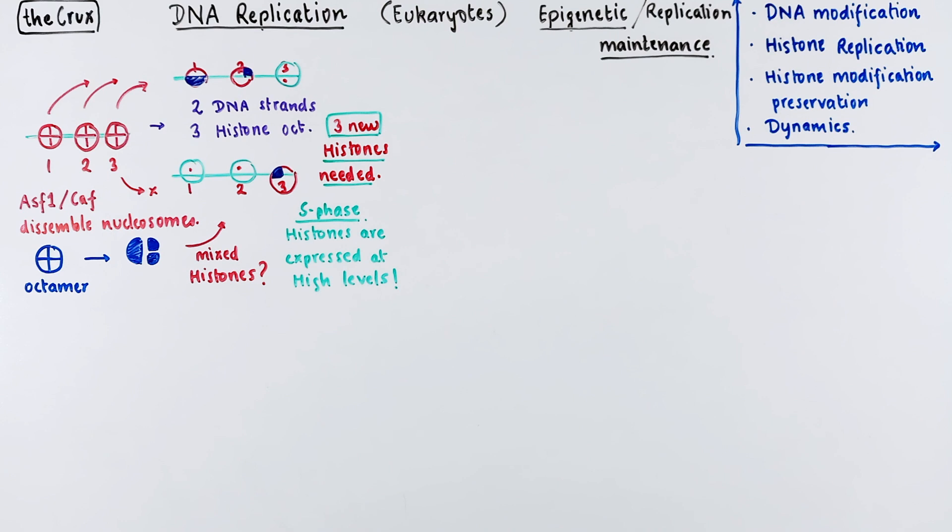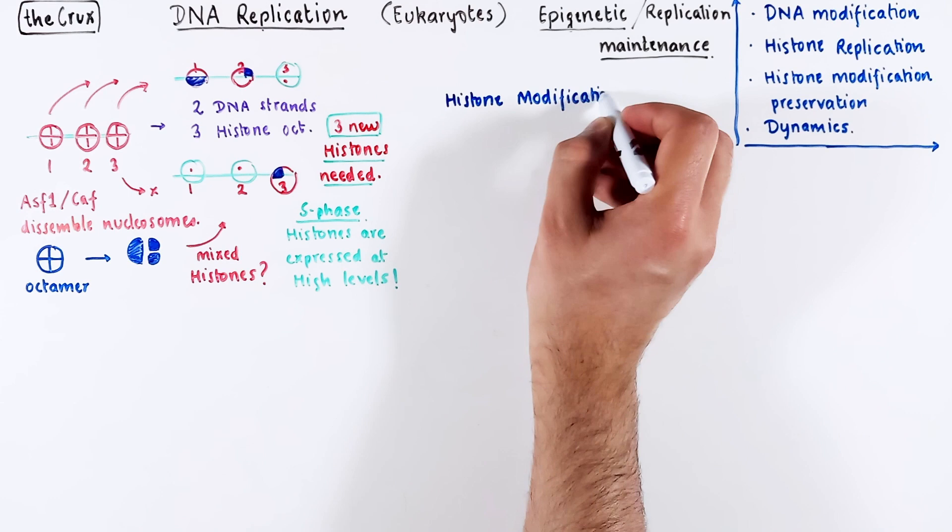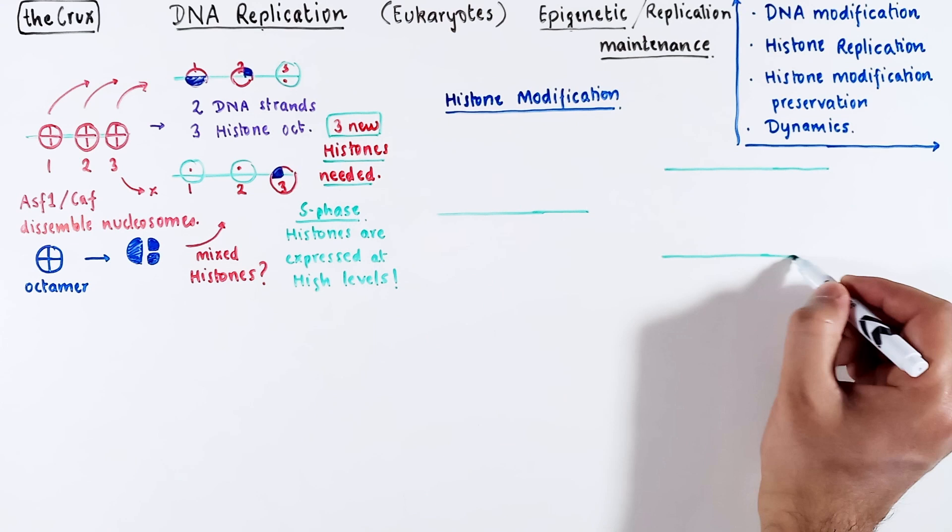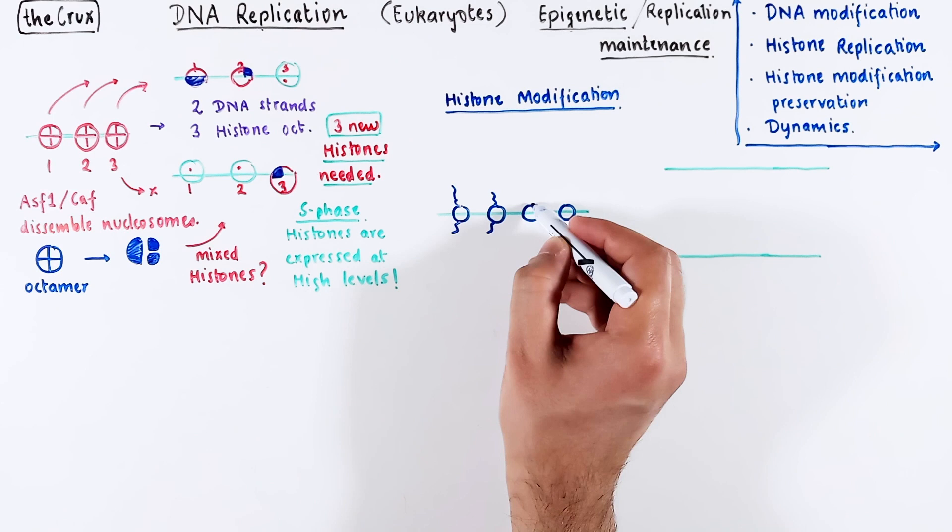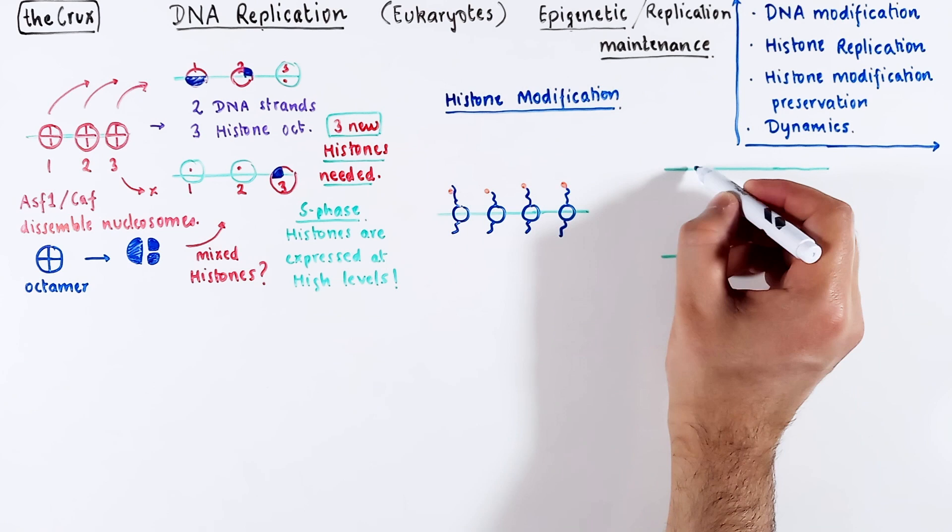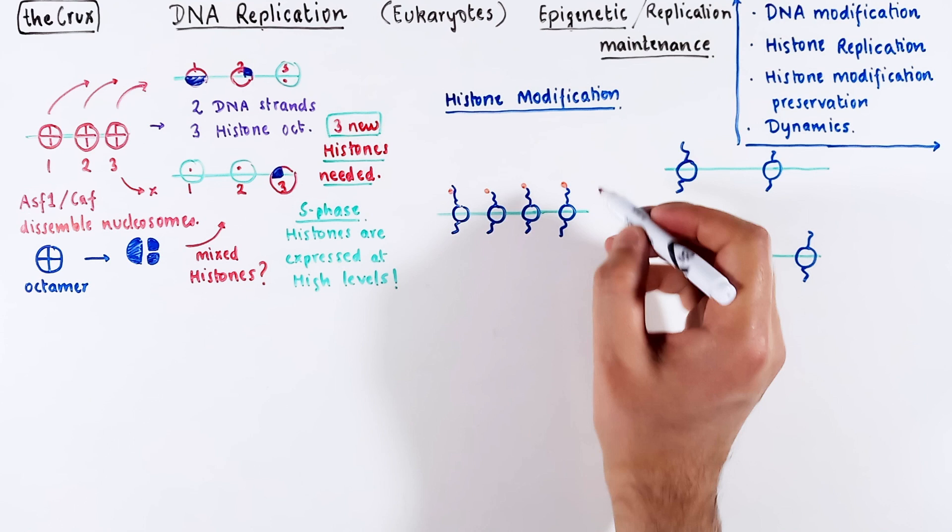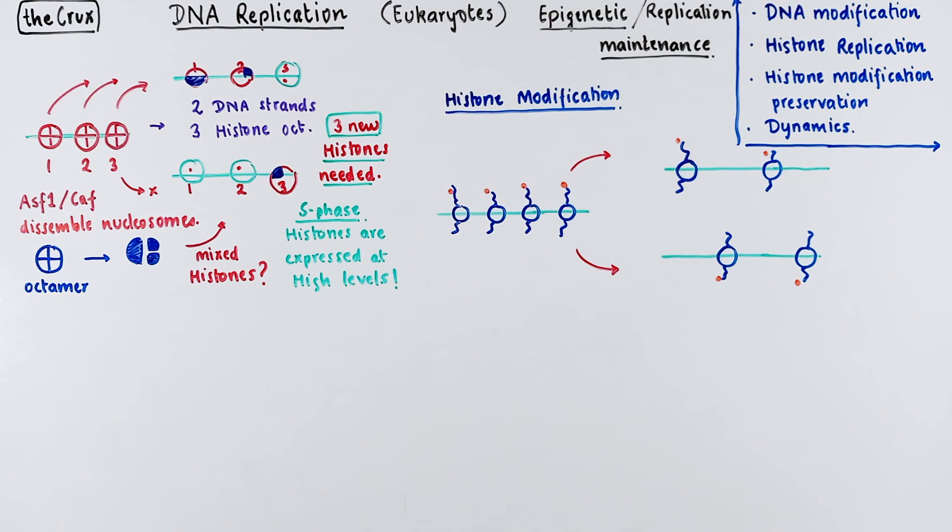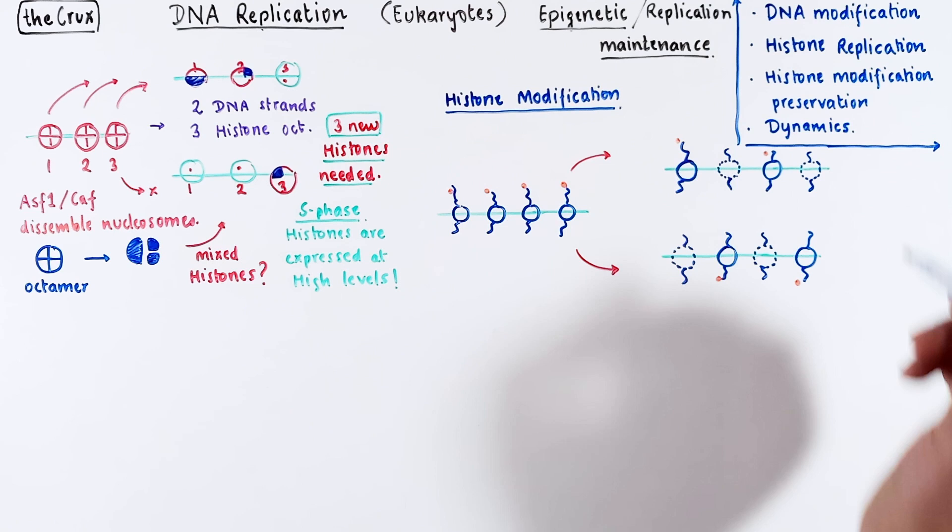Let's add a bit more complexity to our problem and talk about histone modification. We start with the same idea that DNA has replicated into two daughters. And instead of histones, now we focus on the tails of the histones. And typically these tails have some form of modification, a post-translational modification. So after replication, when you distribute the histones, and let's assume the distribution is unbiased, the old histones will carry over the modification.